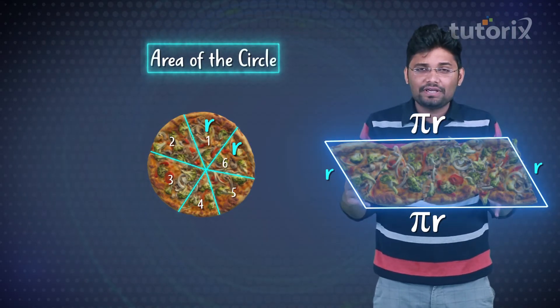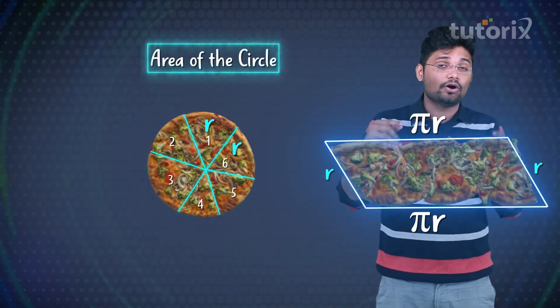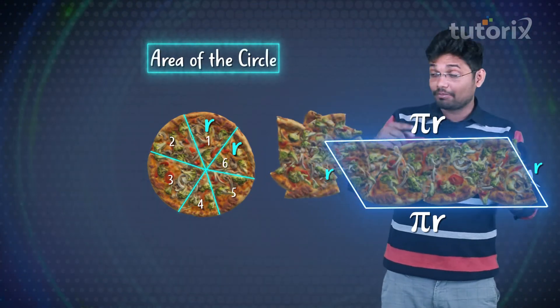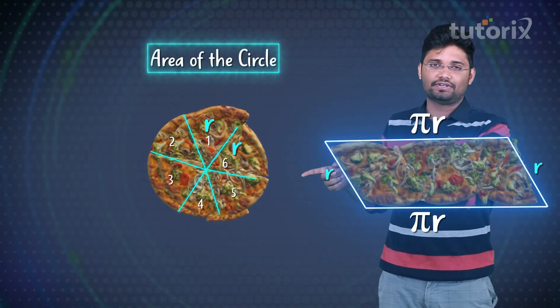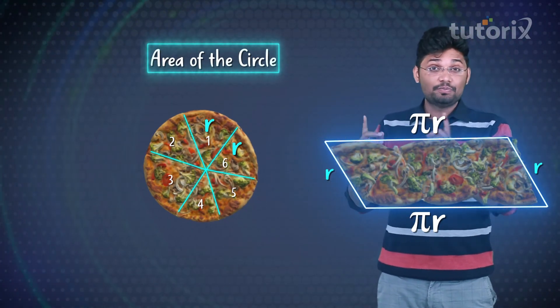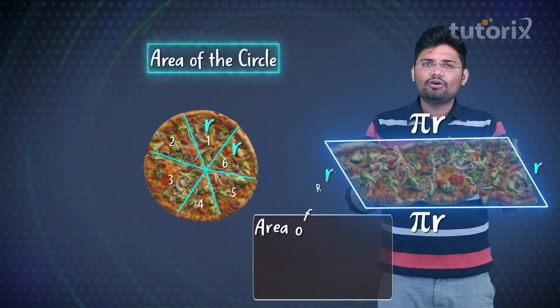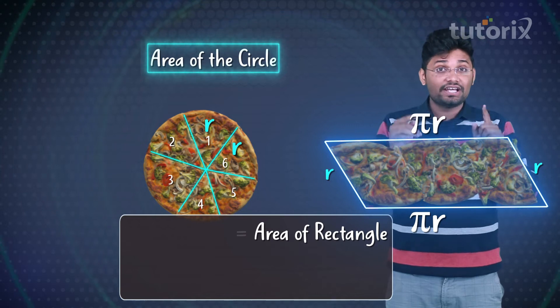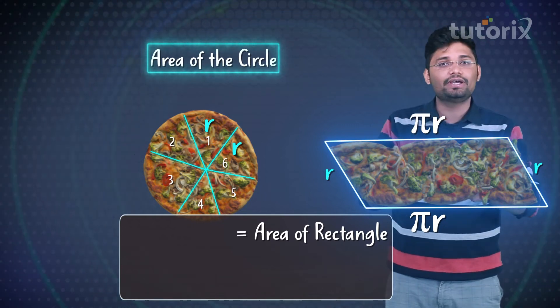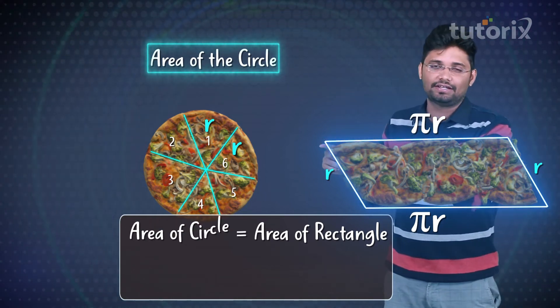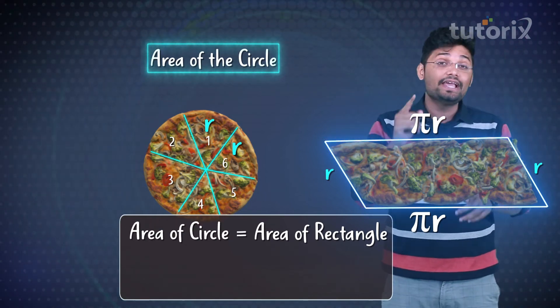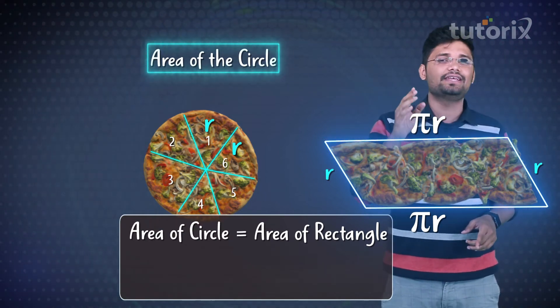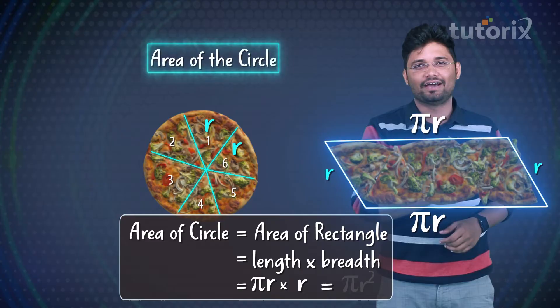Now this rectangular pizza is actually obtained from the circular pizza. This means the area of this rectangle will definitely be equal to the area of that circle. Thus the area of the circle is equal to πr².